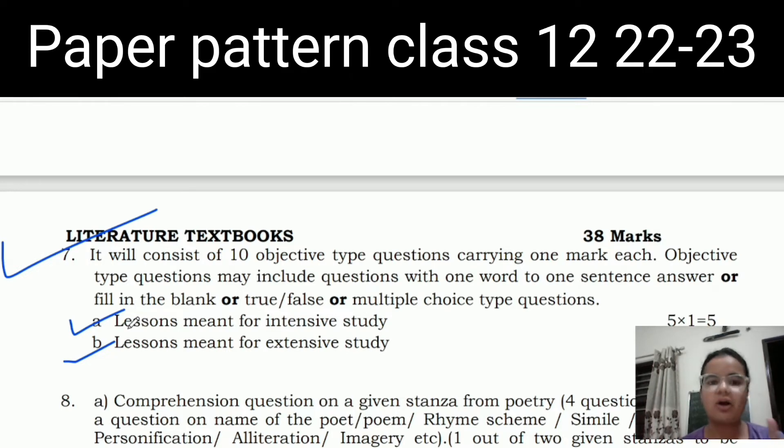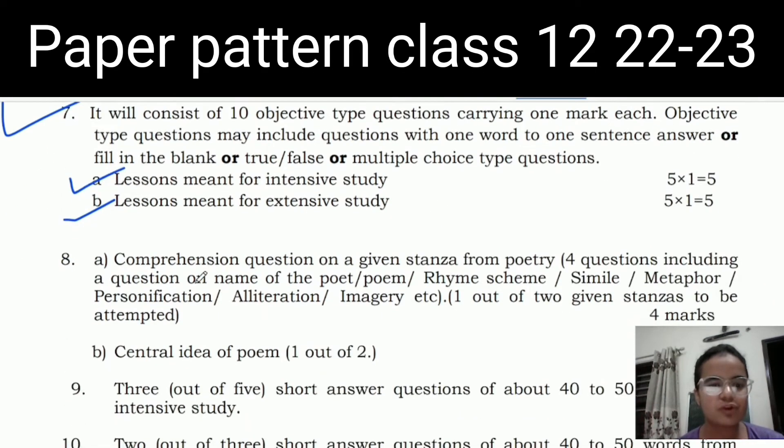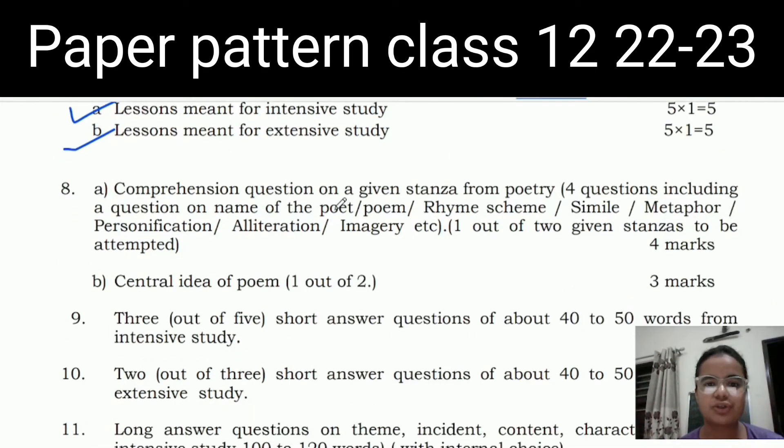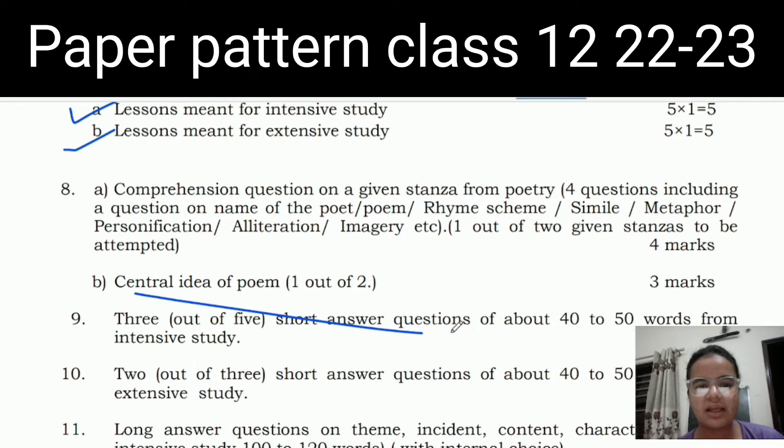You will have 5 objective type questions from intensive study and 5 from extensive study. Then, comprehension question on a given stanza from poetry with 4 questions including the name of the poet. You will be asked about the rhyme scheme. Two stanzas will be attempted from the poems, because it will be for 4 marks. This central idea of poem section is for three marks.